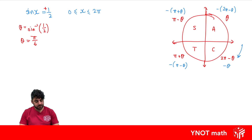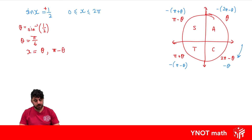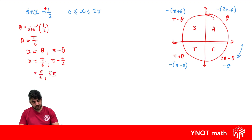We're expecting answers in the first and second quadrant. In the first quadrant we want an answer of theta, and in the second quadrant we want an answer of pi minus theta. So our final values for x are pi on 6 and pi minus pi on 6, which gives us pi on 6 and 5 pi on 6.